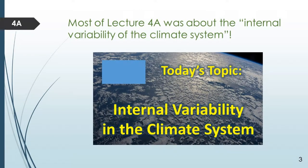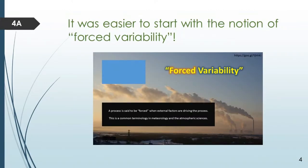Let's start by talking about Lecture 4a. Most of Lecture 4a was about what we call the internal variability of the climate system. The internal variability of the climate system turned out to be a hard thing to define. It was easy to show examples of it, but it turned out to be easier to launch this first by talking about what we meant by forced variability. We can talk about forced variability as being driven by external factors that are not being caused within the climate system itself.